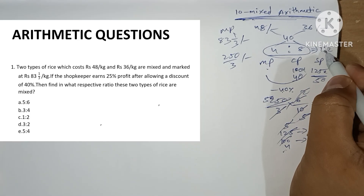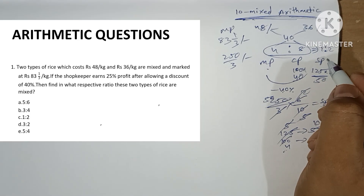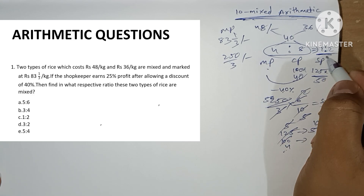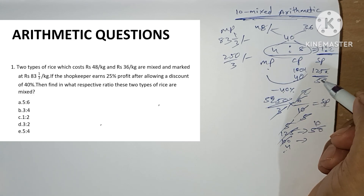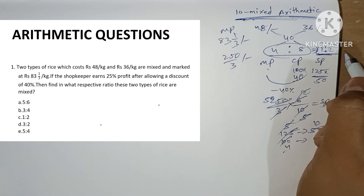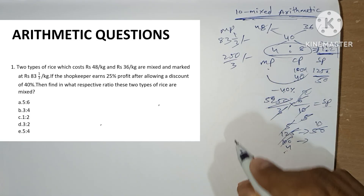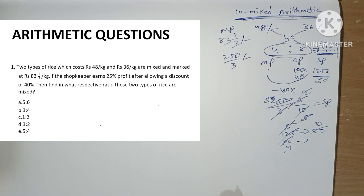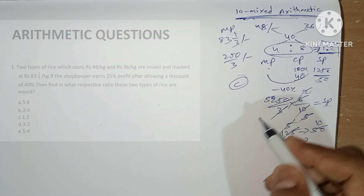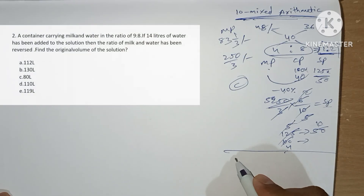The question asks for the respective ratio of the two types of prices mixed. The answer is 1 is to 2. Option C is our answer.